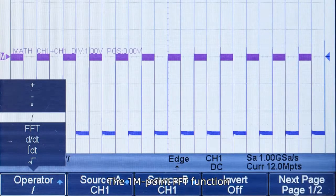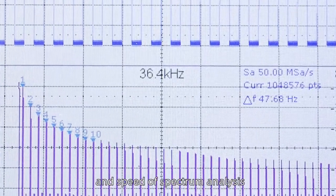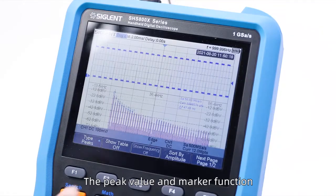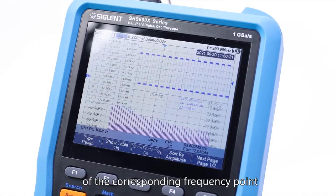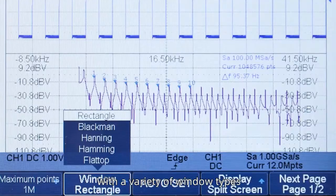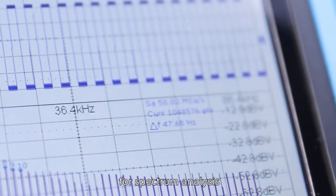The 1-megapoint FFT function uses an embedded math coprocessor that greatly improves the accuracy and speed of spectrum analysis. The peak value and marker function can directly display the amplitude of the corresponding frequency point. With a variety of window types, it can meet the needs of various requirements for spectrum analysis.